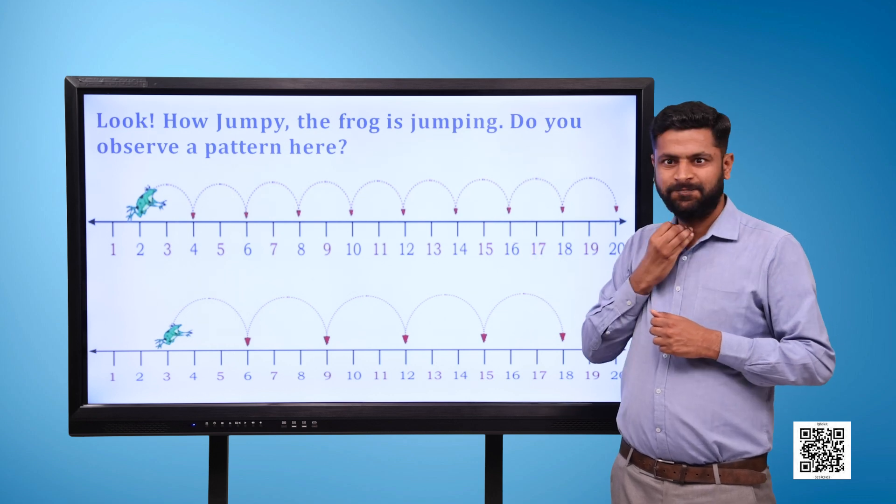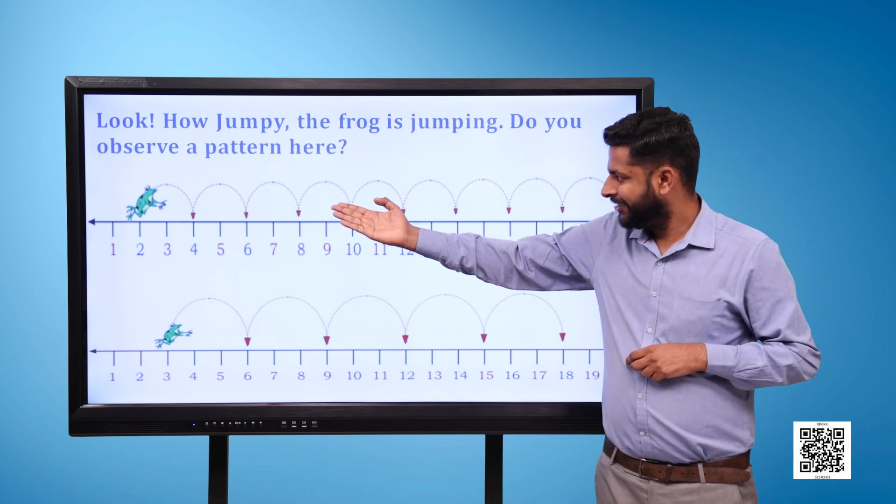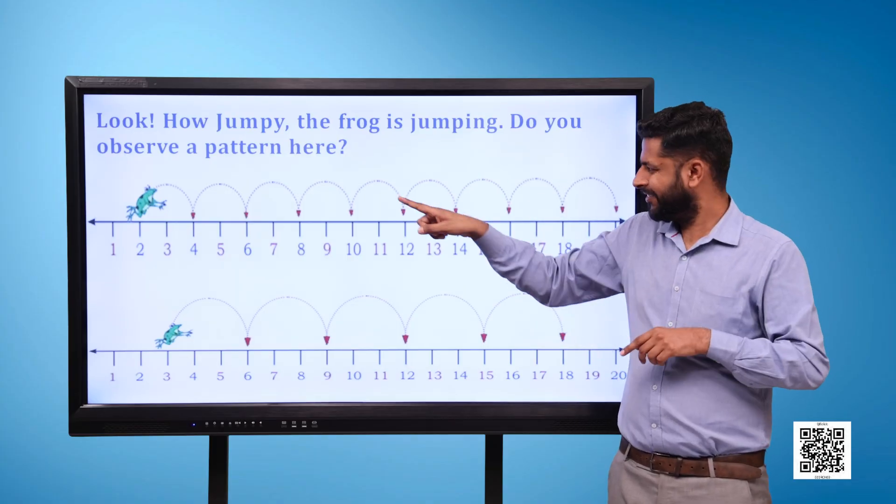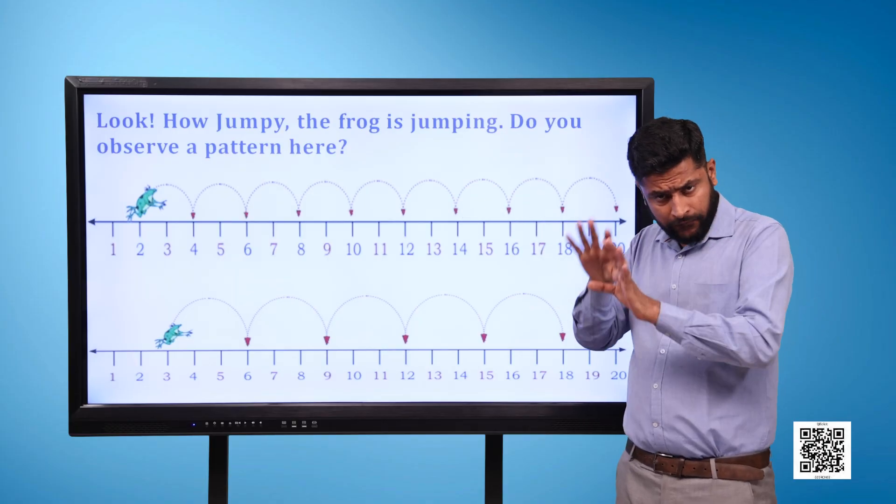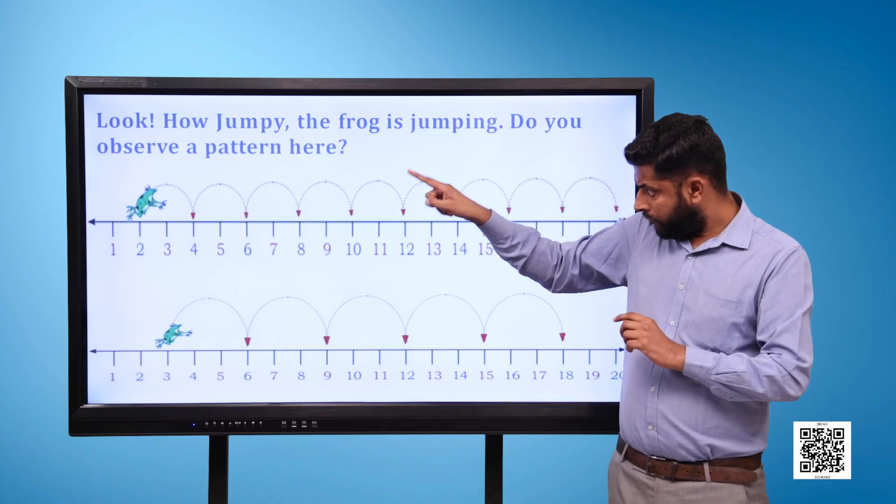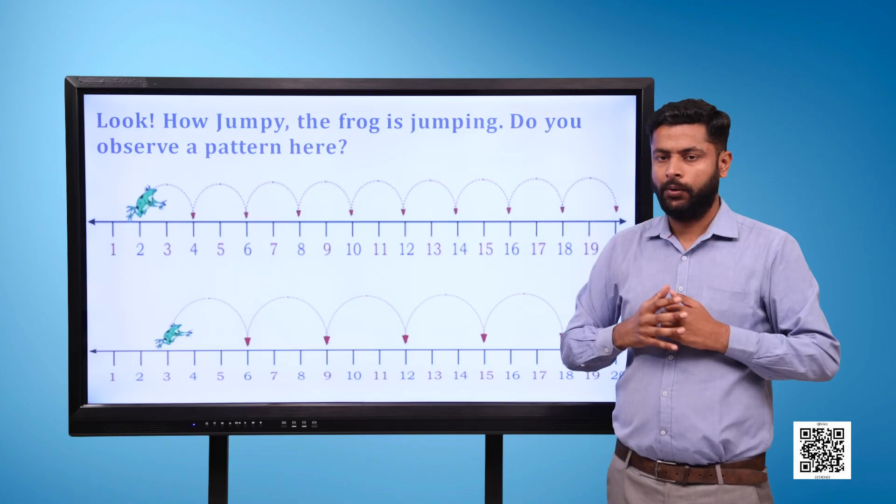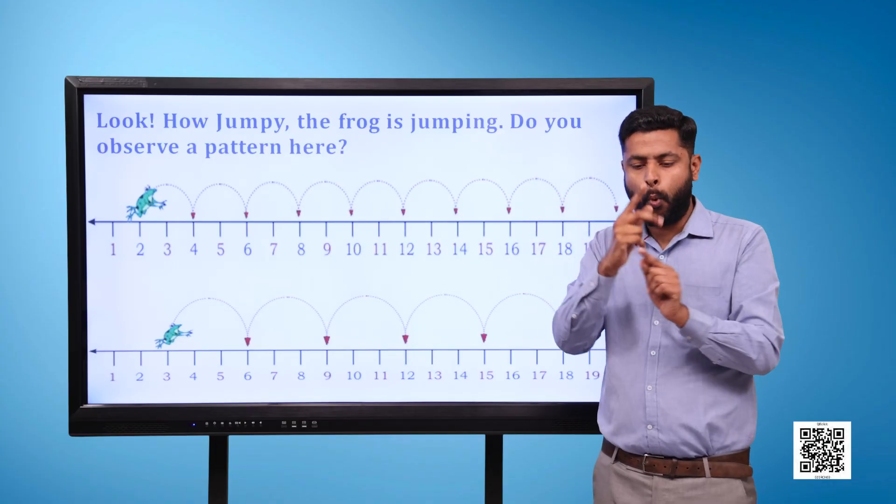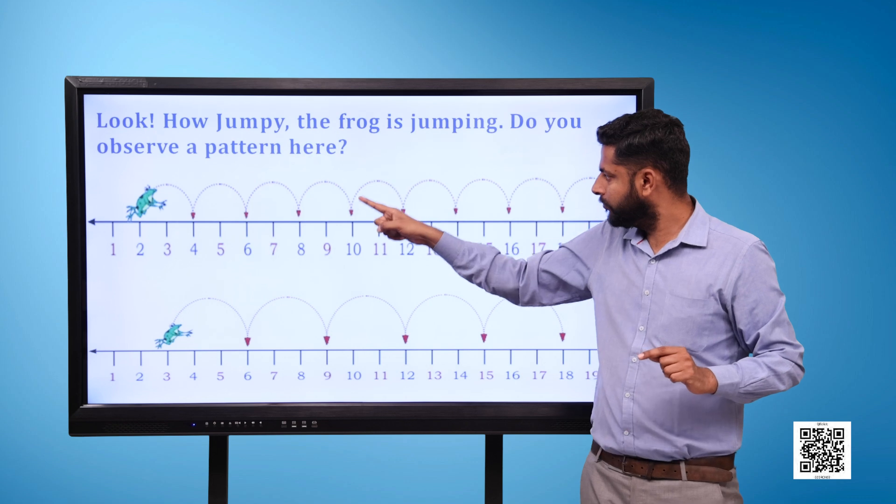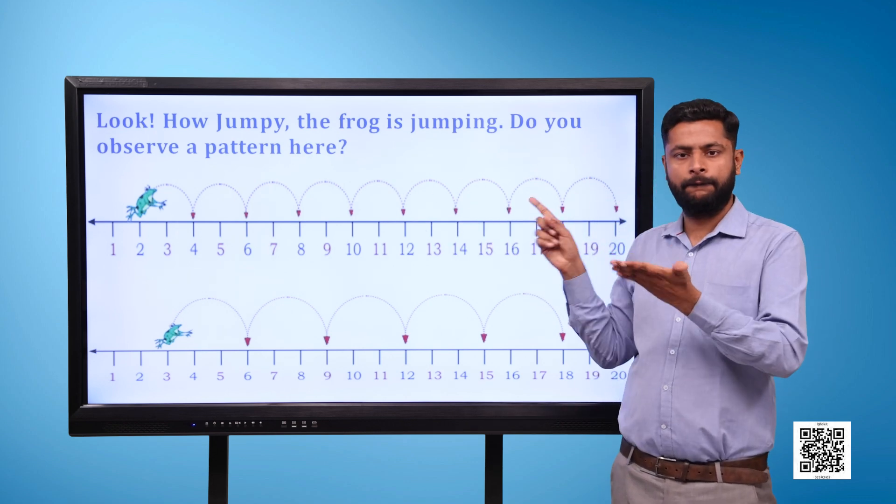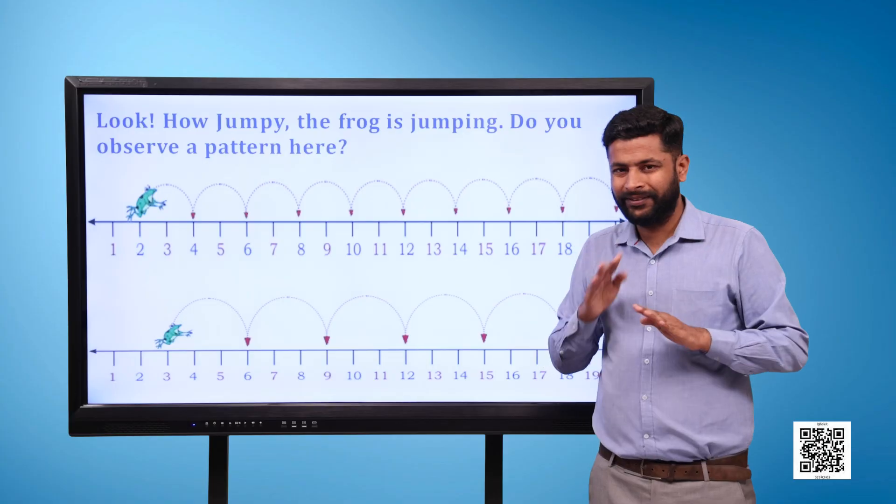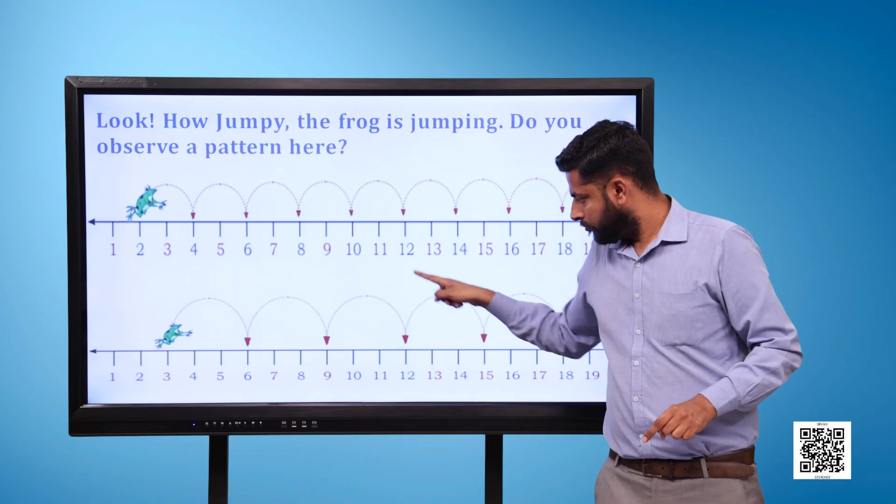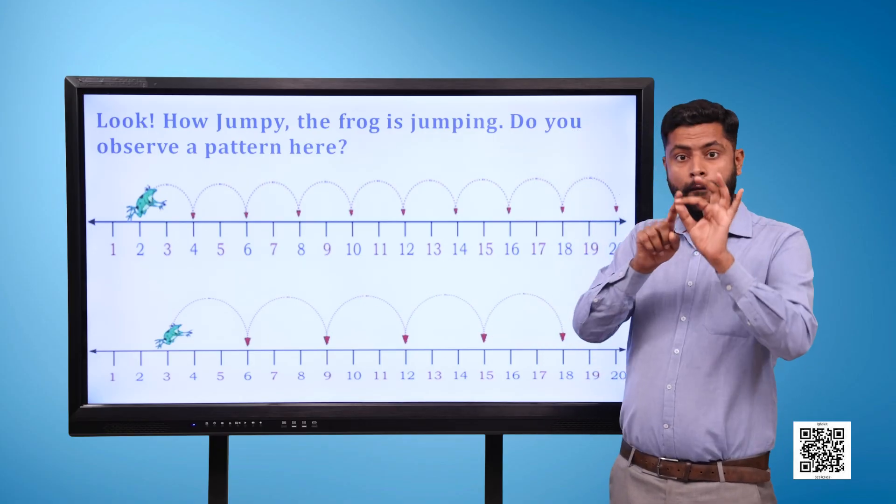Look how jumpy the frog is jumping. Do you observe a pattern here? A number line is given. The first number is 1 and last number is 20. A frog is placed on number 2. The frog jumps 9 times and in every jump he crosses 2 points: from 2 to 4, 4 to 6, 6 to 8, and so on to 20. In the second number line, the frog is placed on number 3 and makes 5 jumps, crossing 3 points in every jump.